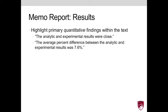For example, it's no longer appropriate to say something like, the analytic and experimental results were close. People may ask, well, how close is close? Rather, we can describe this using quantitative findings, and could say something like, the average percent difference between the analytic and experimental results was 7.6%.